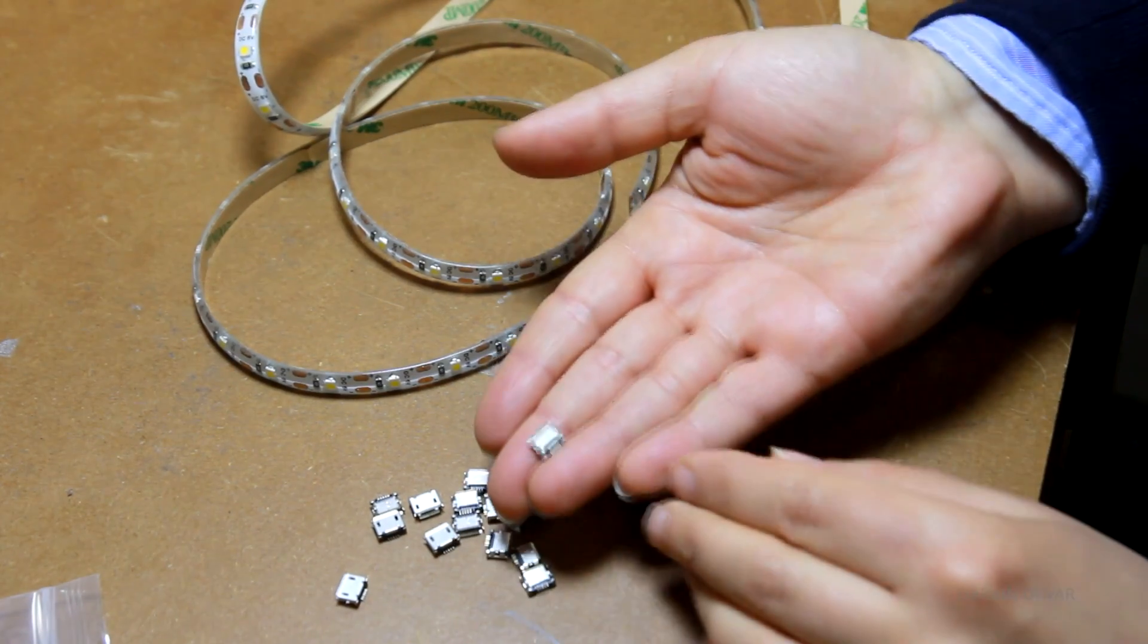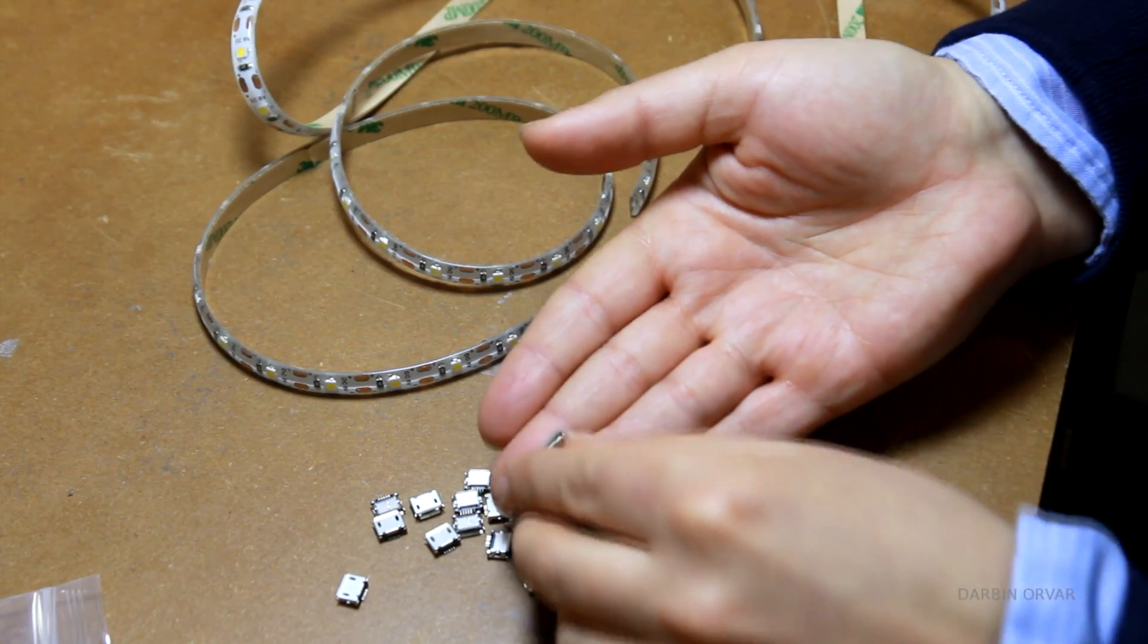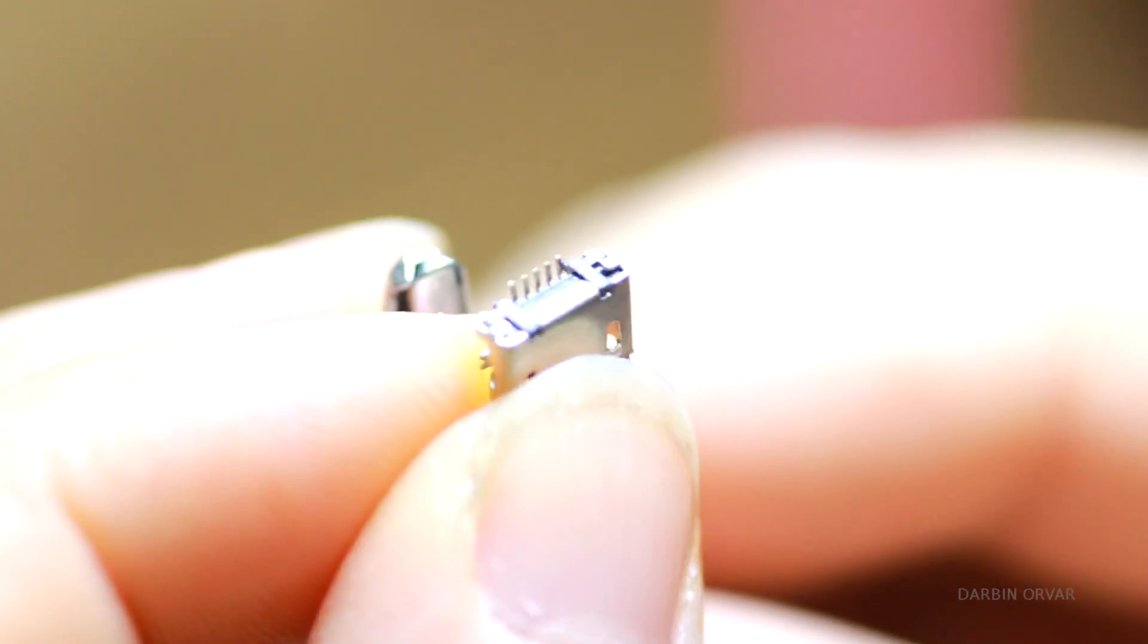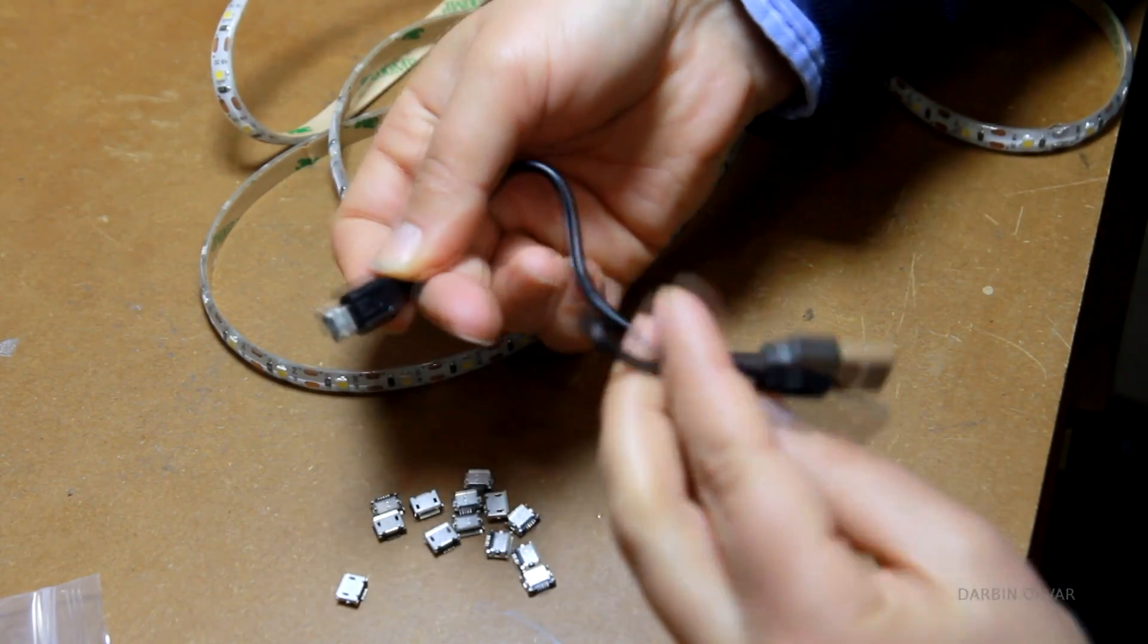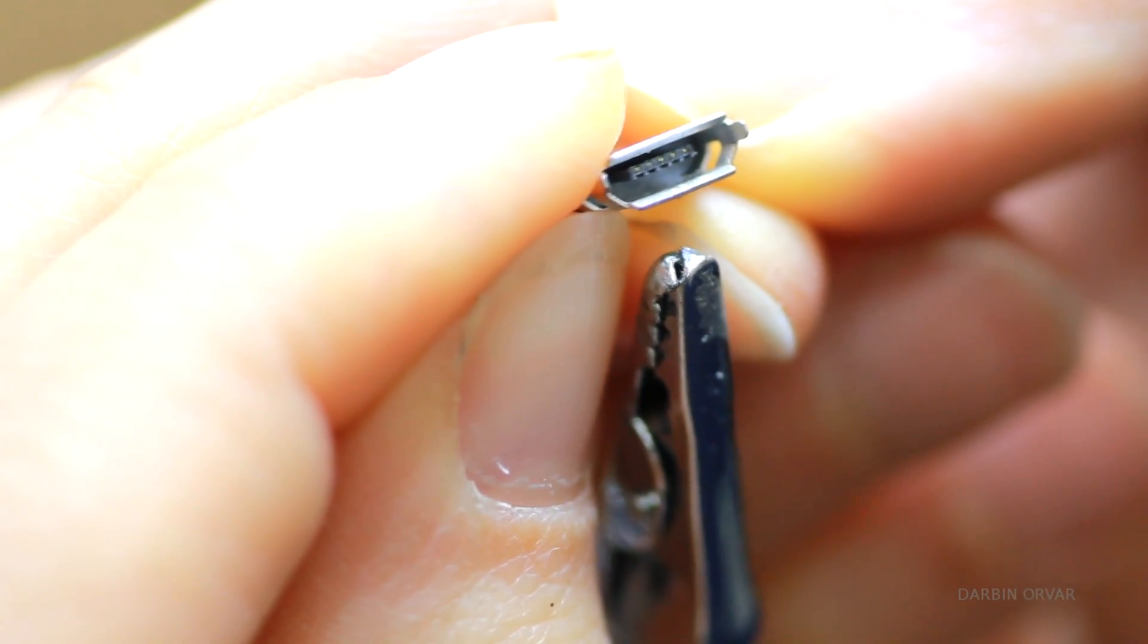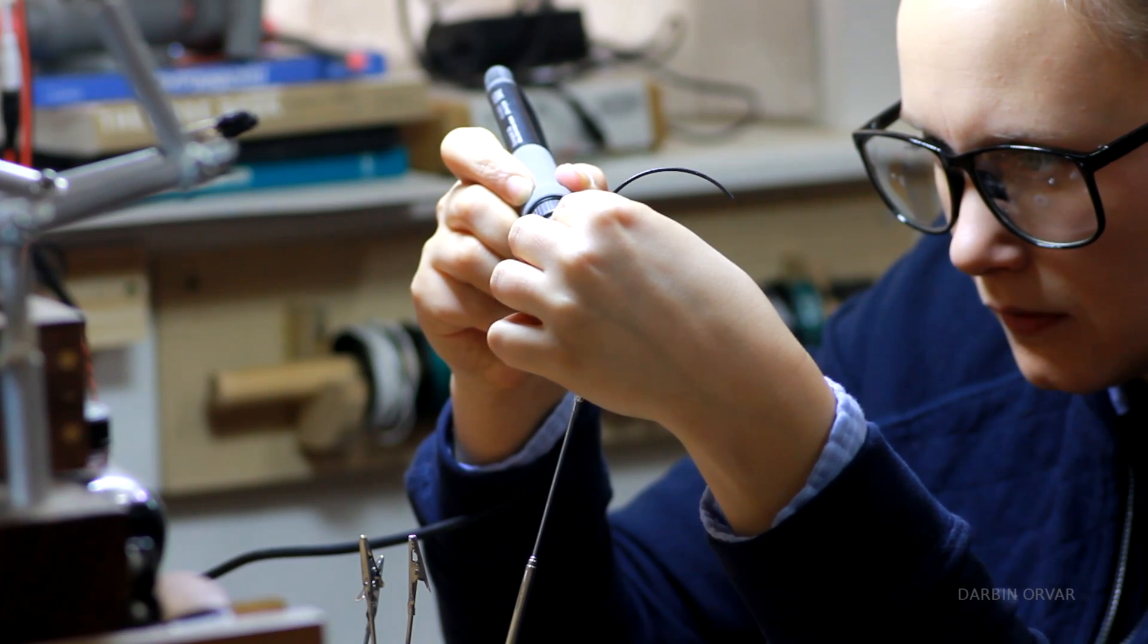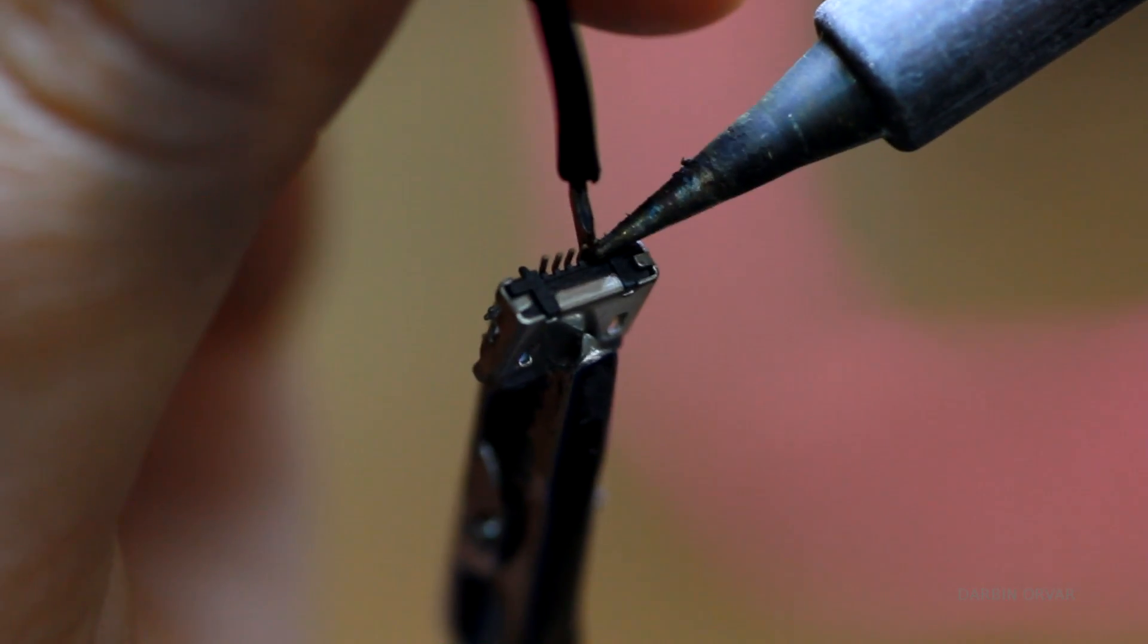I'm going to be using a micro USB, and these are really tiny. This is what you need so you can plug any phone charger in. Now these have multiple pins because the middle ones carry information. But I only have to concern myself with the ones on the ends, which are positive and negative.